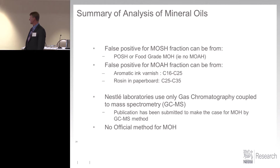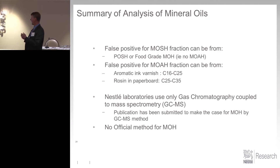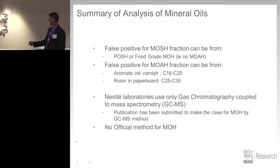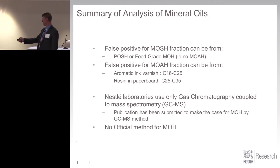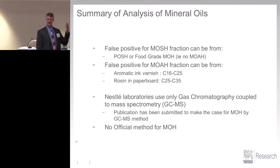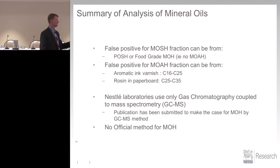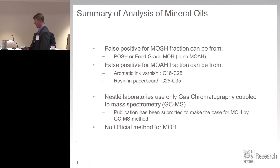False positives for the MOSH fraction can be from POSH or food-grade mineral oil with no MOAH. So when you only find POSH or MOSH with no MOAH, it's food grade. False positives for MOAH — the aromatic — can be from ink varnish. There are some aromatic compounds used in the outer clear coating layer that kind of look like styrene. And rosins from paperboard can also give a false positive for aromatic mineral oil.